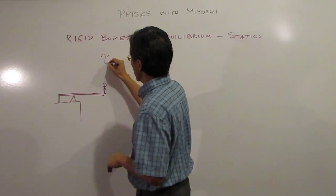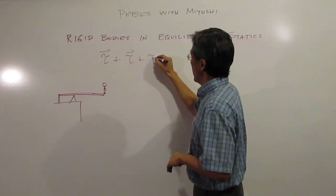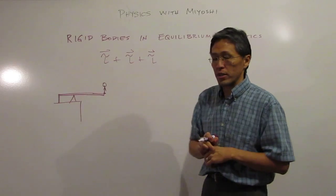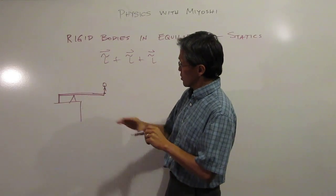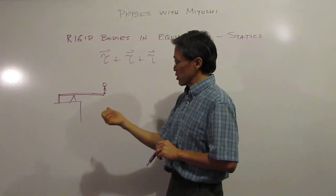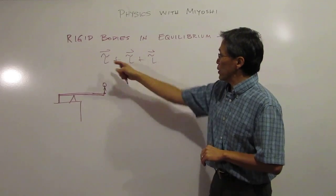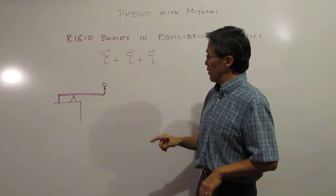You can add torques, just like you can add forces. You can just add them vectorially, and most of the time, if we're talking about something like this, we just have some that are positive torques, they're pointing out from the board, and some of them are negative torques, they're pointing into the board. And you also have to think about torque as where you're rotating around.